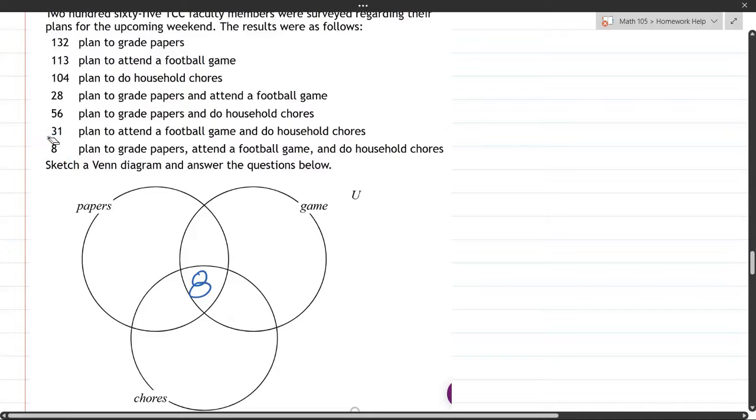Alright, so now that we have that, we've got 31 who want football and chores. So game and chores. There's 31, which means this part right here, there's 31. But there's already eight there, so we've got to take eight out, and that's 23. So there's 23 right here. When we add both of those together, we get 31, which is the number that is circled over here.